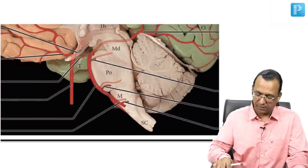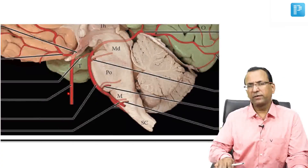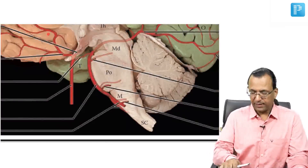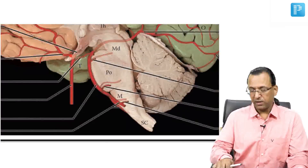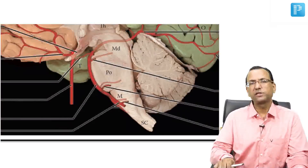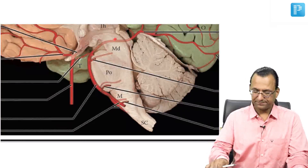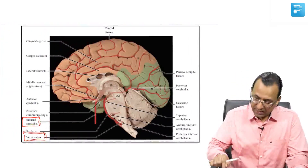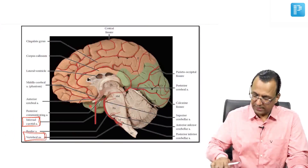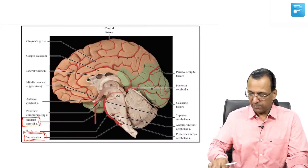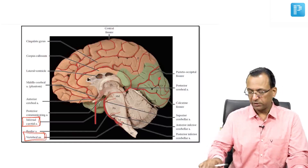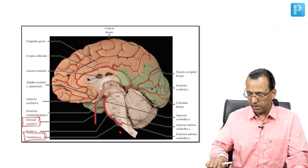The internal carotid artery is more anterior and gives branches including the anterior cerebral artery and the middle cerebral artery. The posterior cerebral artery is given by the basilar artery, which is a branch of the vertebral artery. So there will be one anterior cerebral artery and one middle cerebral artery as branches of the internal carotid artery, while the posterior cerebral artery is a branch of the basilar artery.